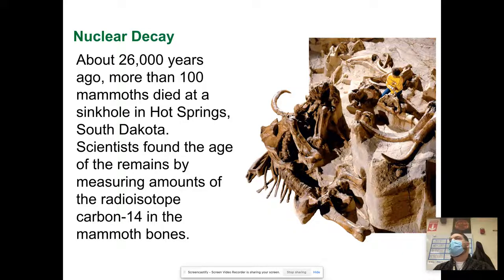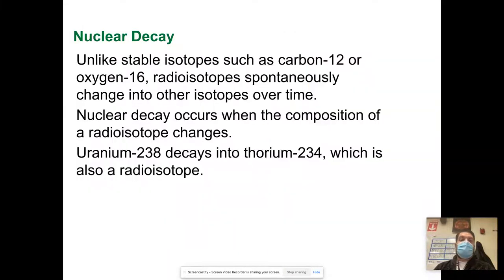Carbon-14 is bombarded with subatomic particles that give them an extra two protons over time. Because that's not the stable measure for carbon, it decays. Unlike stable isotopes such as carbon-12 or oxygen-16, radioisotopes spontaneously change into other isotopes over time. Nuclear decay occurs when the composition of a radioisotope changes. Uranium-238 decays down to thorium-234, which is also a radioisotope.